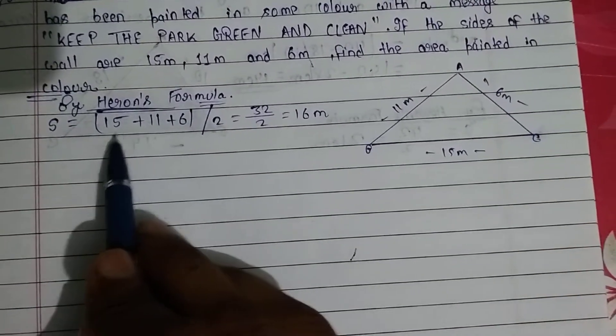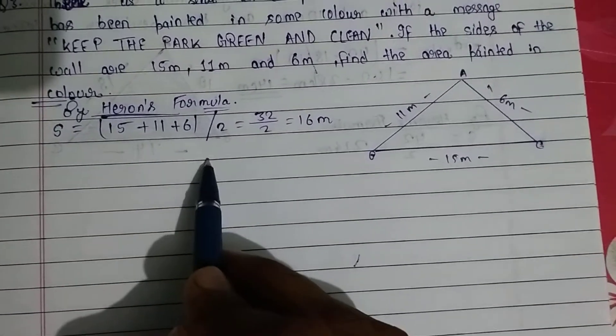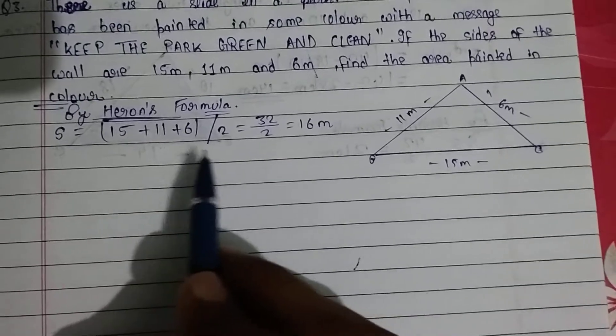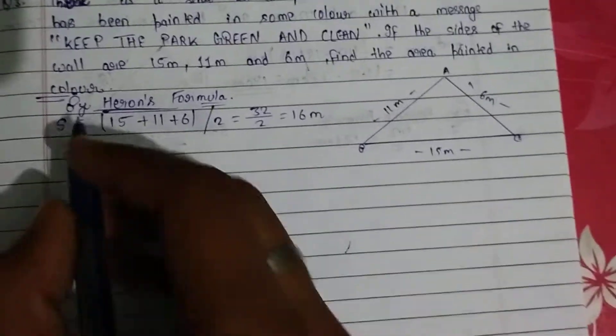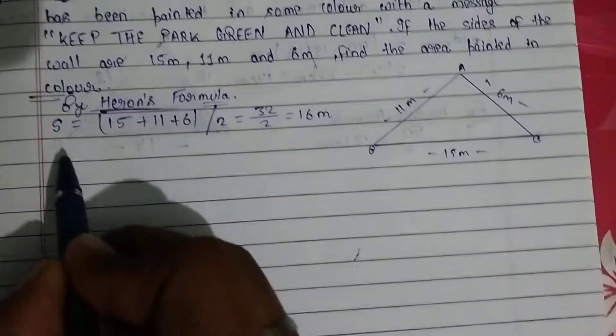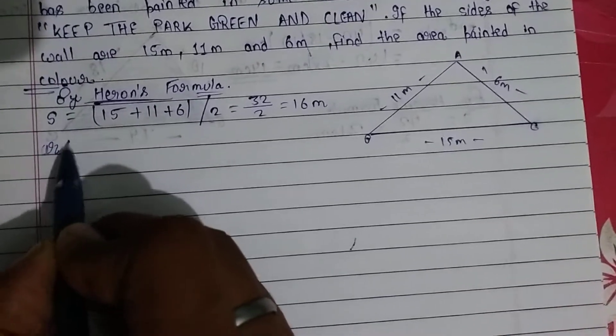s equals the semi-perimeter, which is the sum of sides divided by 2. So s = (15 + 11 + 6)/2 = 32/2 = 16 meters. Now for the area of triangle...